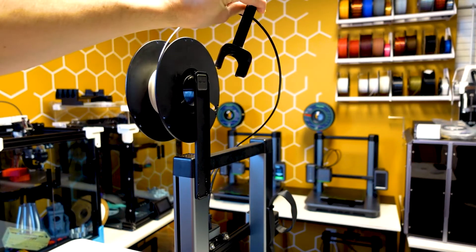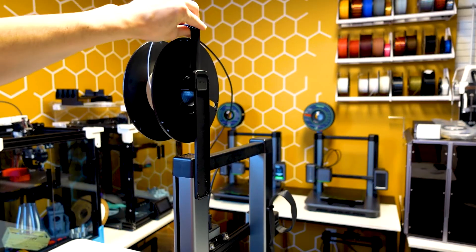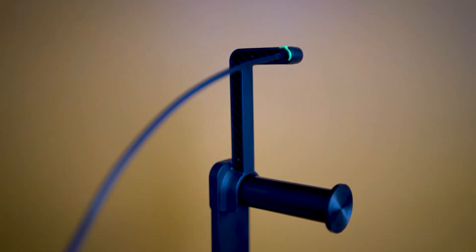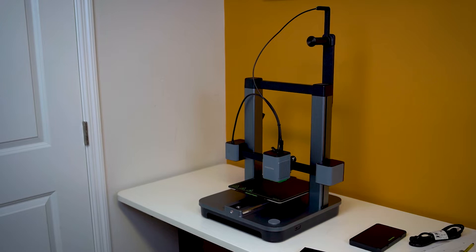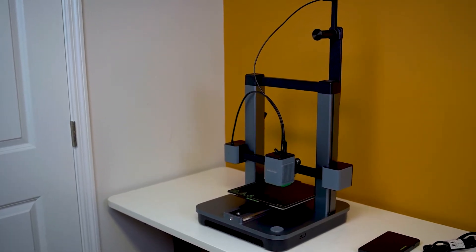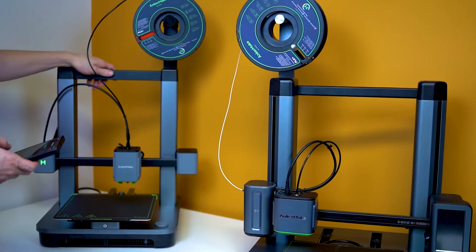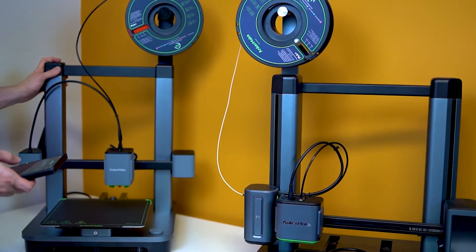The problem comes with this reverse Bowden tube. It comes with the flimsiest, floppiest mount. This is not something I would have ever expected to come out of the AnkerMake factory. This thing is a poor design, and the PTFE fitting actually comes loose. I don't think this is going to have a negative effect on print quality, but it really has a drastic negative appeal for the whole printer.